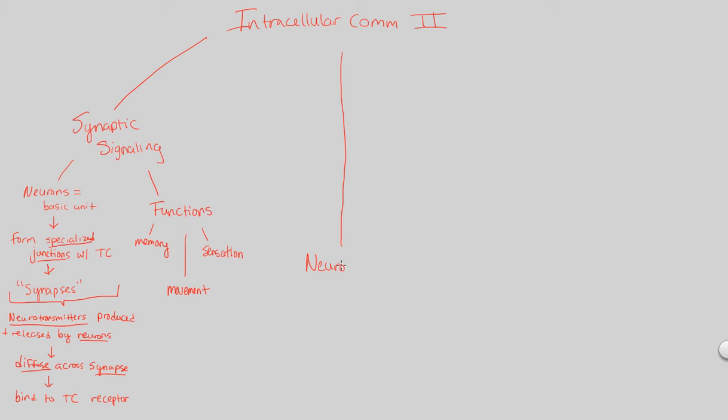We can subdivide and go further in detail in terms of neuroendocrine signaling. When we talk about neuroendocrine signaling specifically, what we have are neurosecretory cells. Instead of broadly saying the functional unit is our neuron, here the functional unit are neurosecretory cells, which are just very specialized neurons, even more specialized than the neurons we've already mentioned.